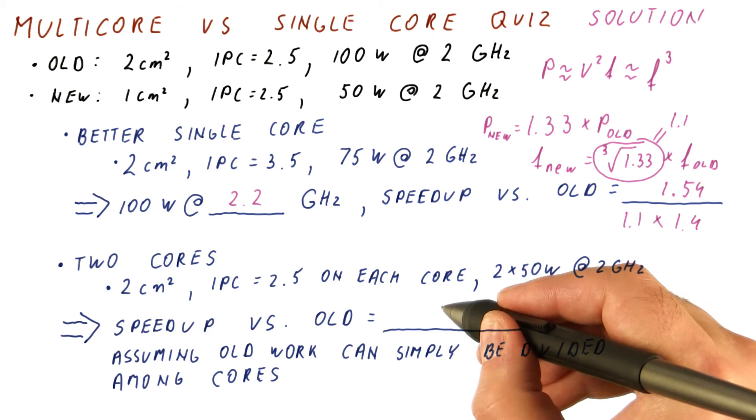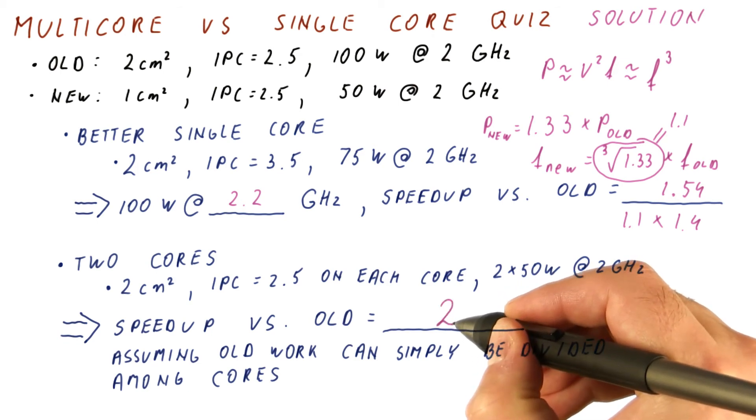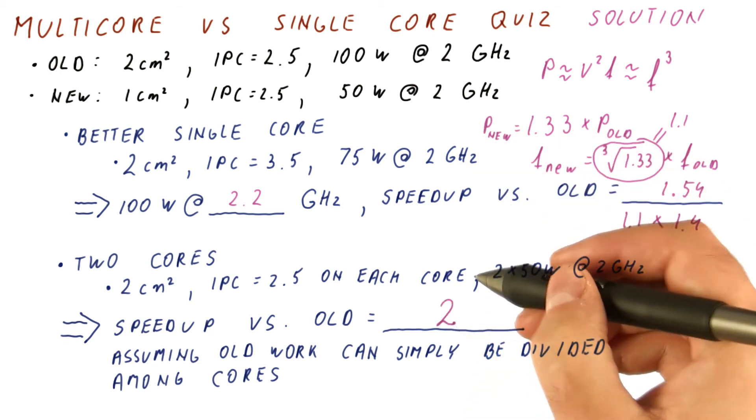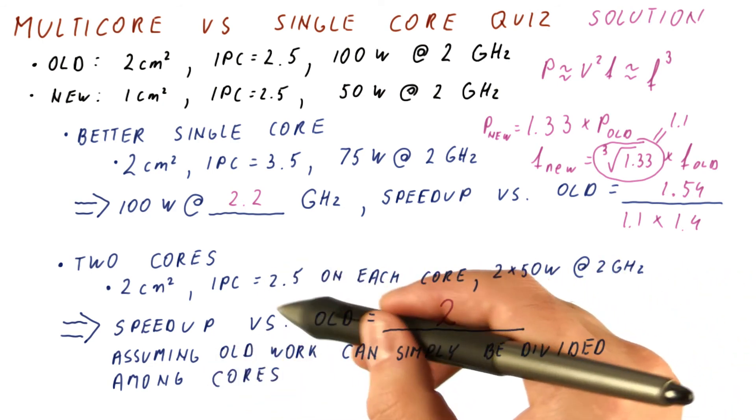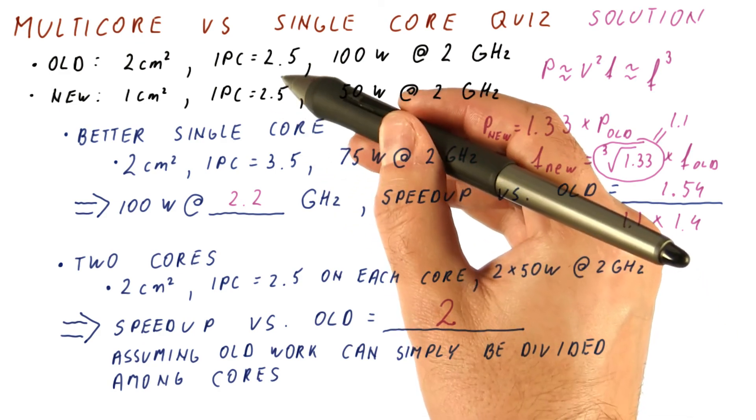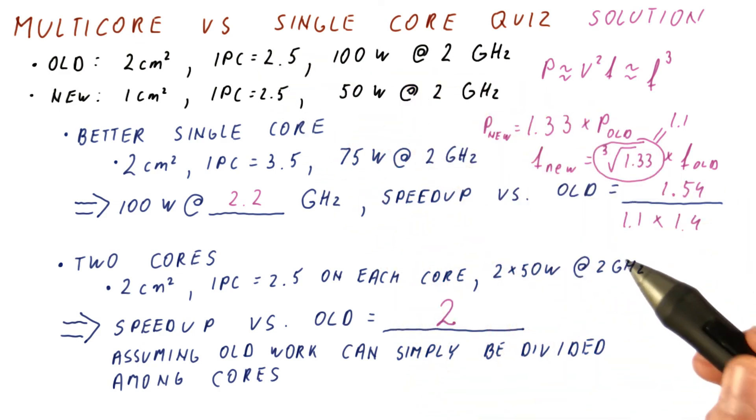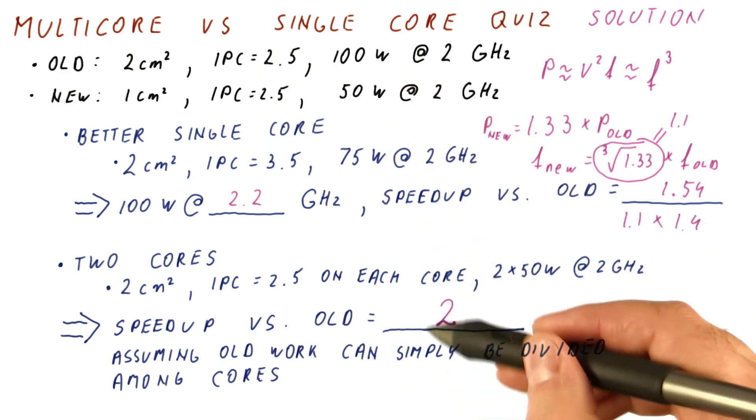So the speedup versus the old system here will simply be 2. We are operating at the same frequency, splitting the same work into two pieces, and each of the pieces is now done at the speed where we were doing only one of the pieces. So overall, we are getting a speedup of 2.